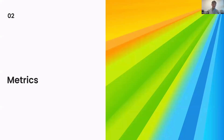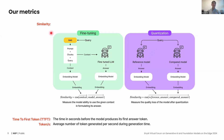What are the metrics we're going to use? Our main metric is similarity. In the case of fine-tuning, we compare the cosine similarity between the embeddings of the context given to our model and our model's answer. This helps us measure the model's capacity to use its context for its response. In the quantization part, we compare the cosine similarity of the reference model's answer versus the compared model's answer, to measure the loss in response quality after quantization. We also use time to first token and number of tokens per second.